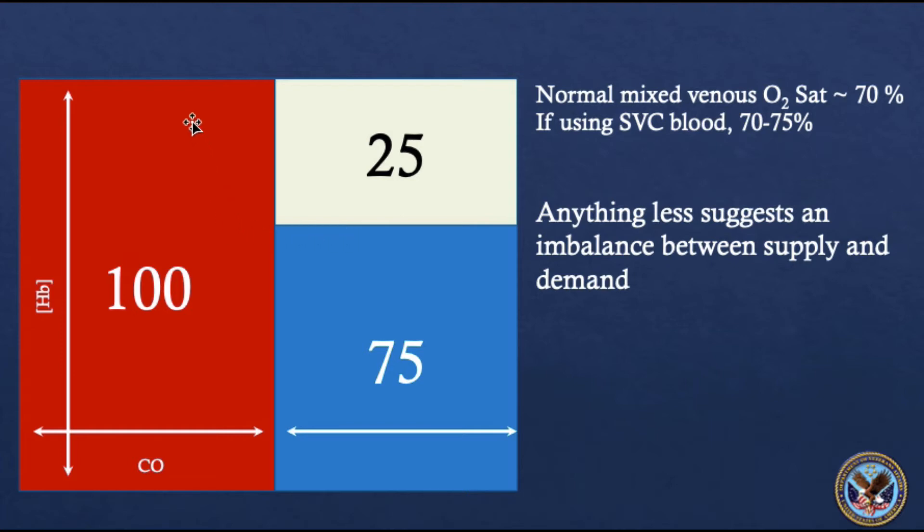If consumption is occurring at a constant level and you have decreases in supply, then what that'll show up as is more extraction relative to that oxygen supply. Or if metabolism goes up, you'll have more extraction relative to the oxygen supply, and that will show up as a change in your oxyhemoglobin saturation of blood.